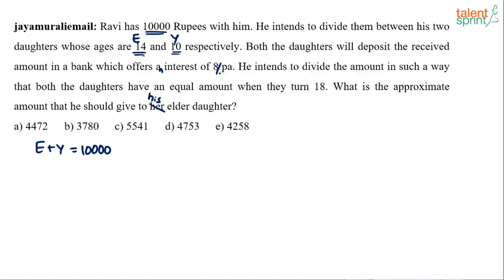Both daughters will deposit the amount in their respective bank accounts, and the bank offers 8% per annum. The elder daughter E is 14 years old, so her amount will be in the bank for 4 years. The younger daughter Y is 10 years old, so after 8 years she'll turn 18 — her amount will be in the bank for 8 years.